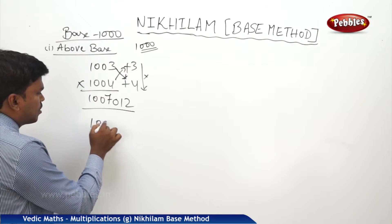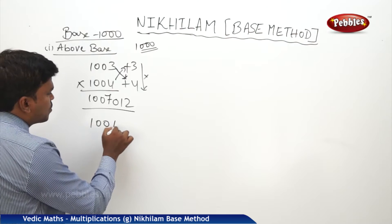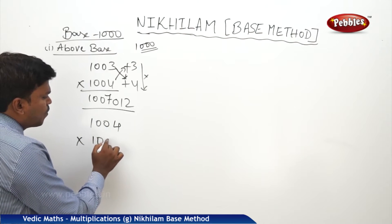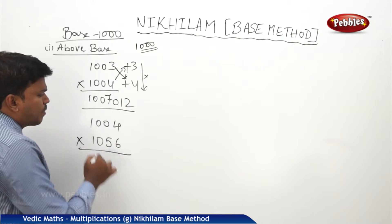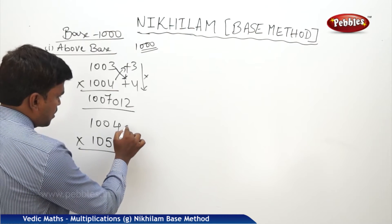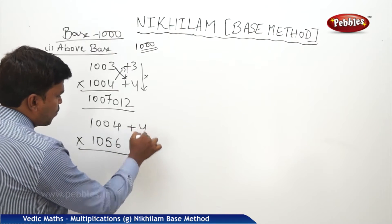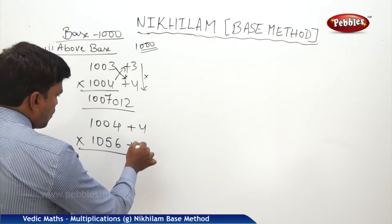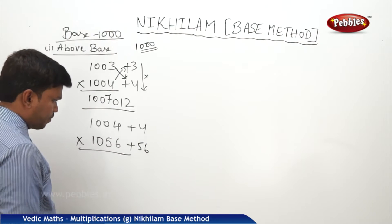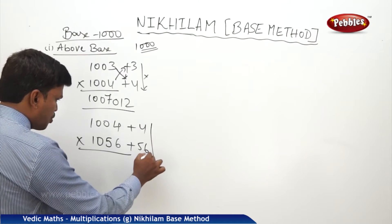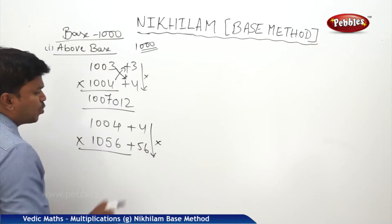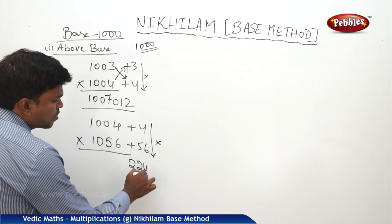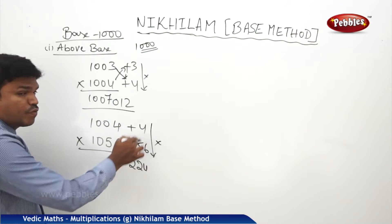One more example. Suppose 1004 into 1056. I want to multiply. This is plus 4 and this is plus 56. What is 56 into 4? You need to multiply these two. So, 224. 224 is the right side part of the answer — that is 4 into 56.